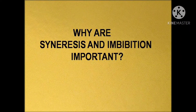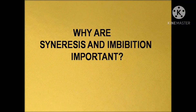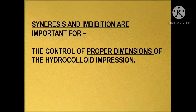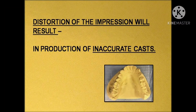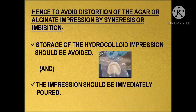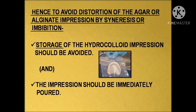Syneresis and imbibition properties are important for the control of proper dimensions of the hydrocolloid impression. Once the impression gets distorted, the cast produced from these impressions will be inaccurate. Both syneresis and imbibition distort the hydrocolloid impressions — the impressions will either shrink or swell. Hence, to avoid such distortions, the storage of hydrocolloid impressions should be avoided and the impressions should be immediately poured.